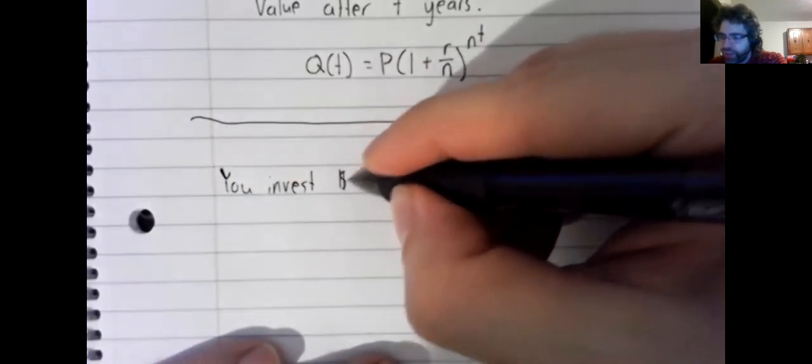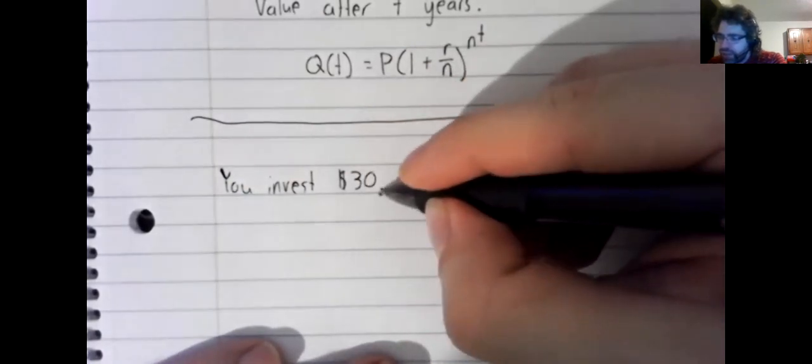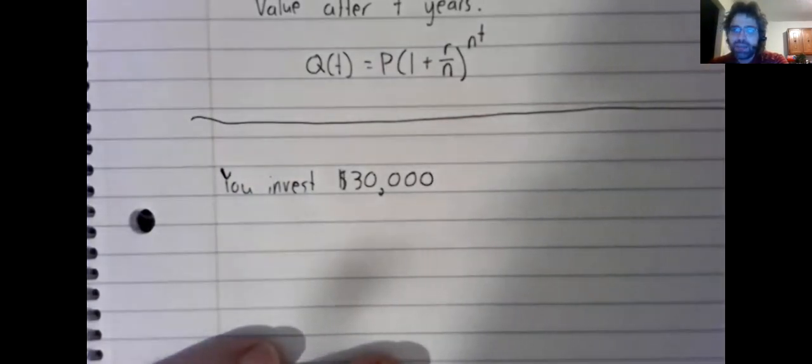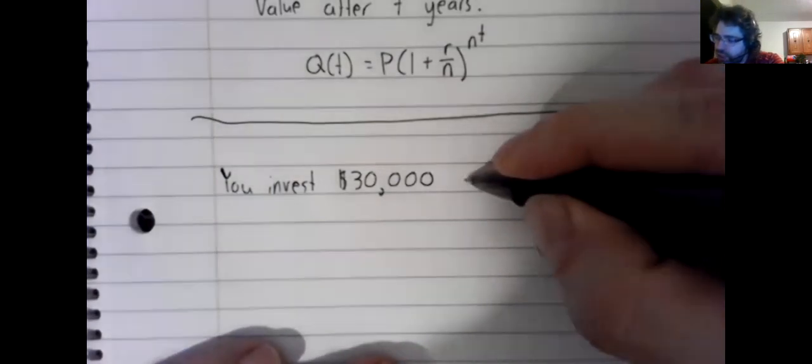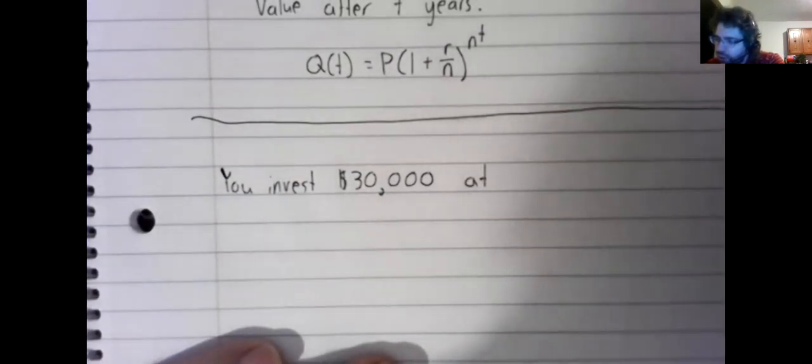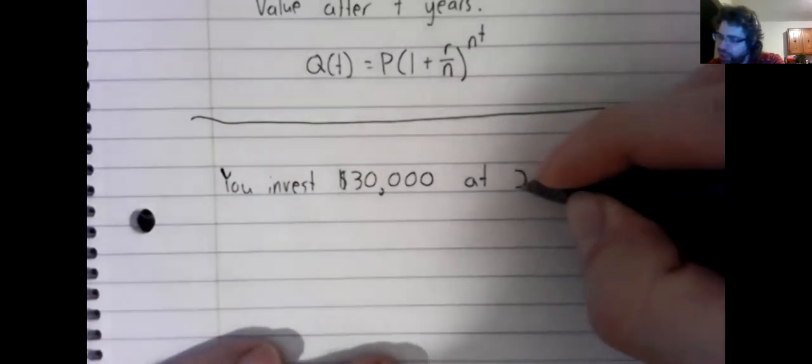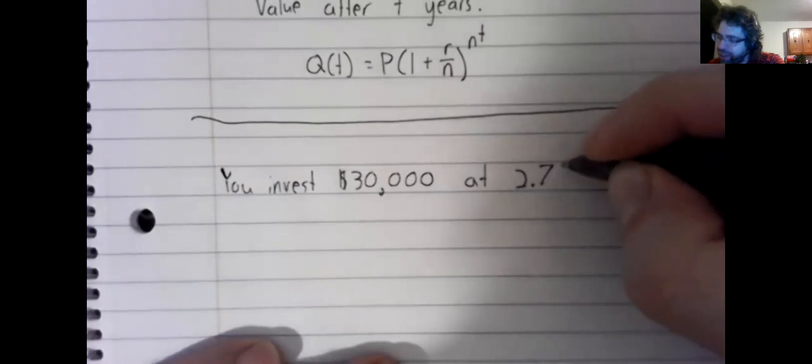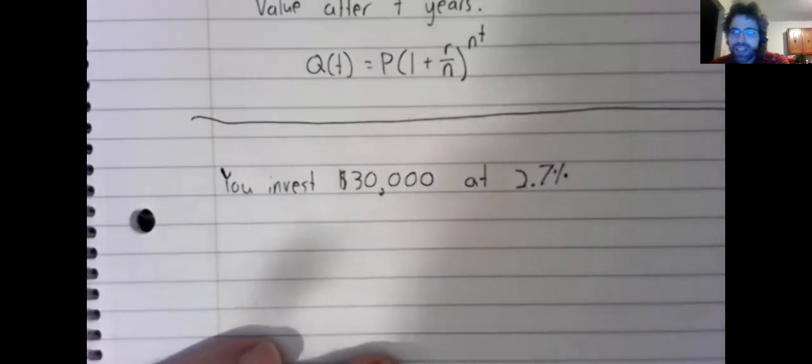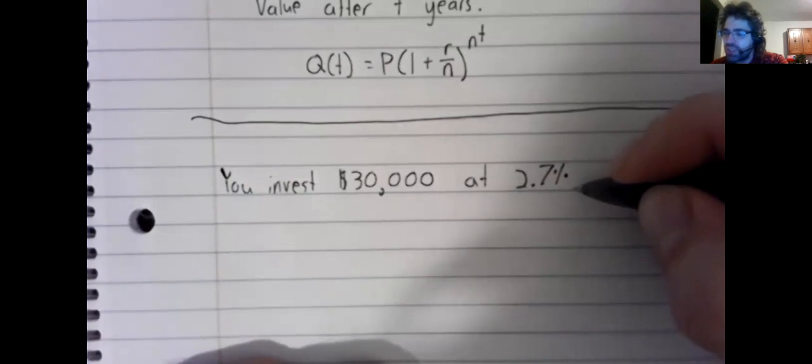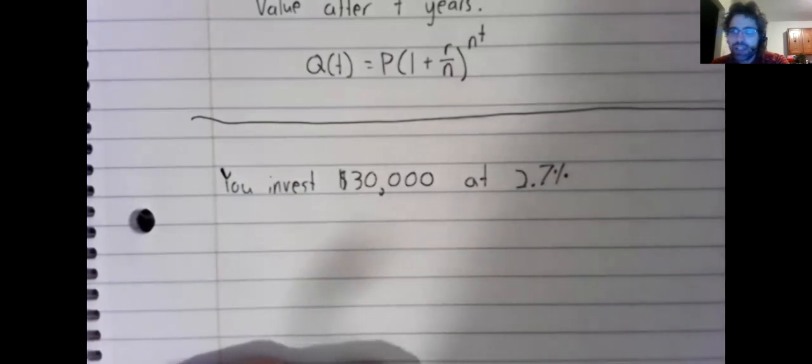I always roll my eyes a bit at these examples. I don't know if you all have $30,000 lying around to invest. I'm sure I don't. But let's say you do invest $30,000 at a 2.7% interest rate.